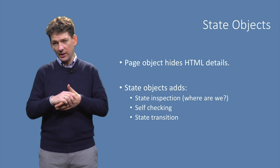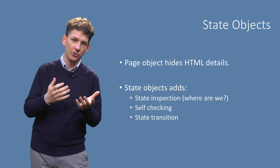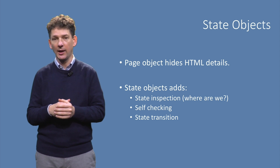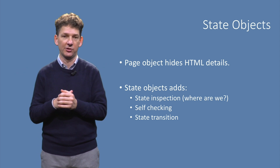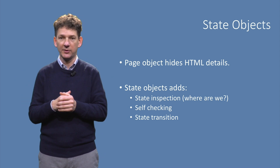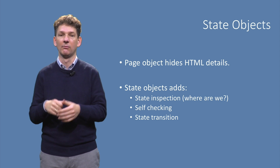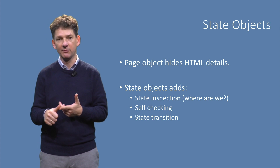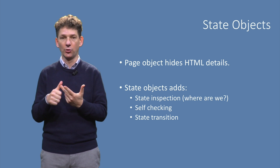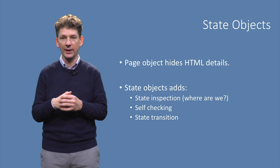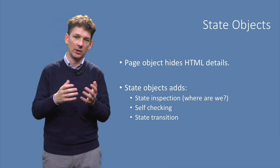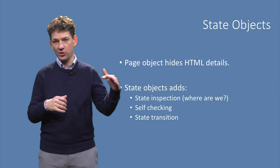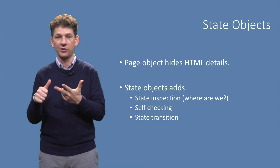Page objects abstract individual web pages or fragments thereof. To take this one step further, page objects should correspond to states in the navigational state machine — I like to refer to this abstraction as state objects rather than page objects. These state objects provide dedicated methods for state inspection, to establish which state the application is in; state transitioning, to move from one page to another; and state self-checking, to ensure that a given state is well implemented — for example verifying that certain buttons are visible or that the right information is displayed. Testing one scenario then consists of a sequence of alternating calls to state transition, inspection, and self-checking methods.